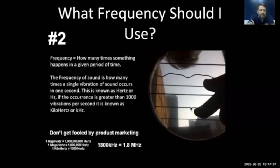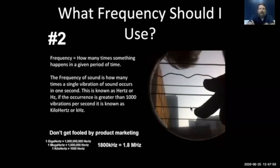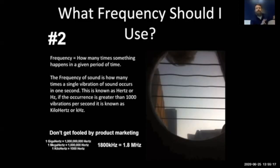Frequency of sound is mostly expressed in what is known as hertz. If you have a thousand of those vibrations or more within one second, it's known as a kilohertz. Most side scan is labeled in that kilohertz frequency zone. Down at the bottom of this slide you will see the translation between kilohertz, megahertz, and gigahertz systems. Low frequencies have very good range; high frequencies have very short range.